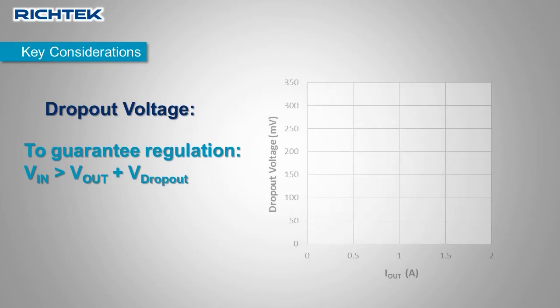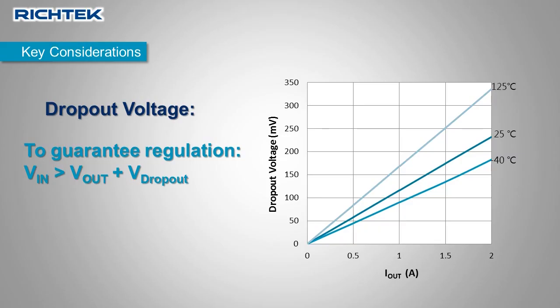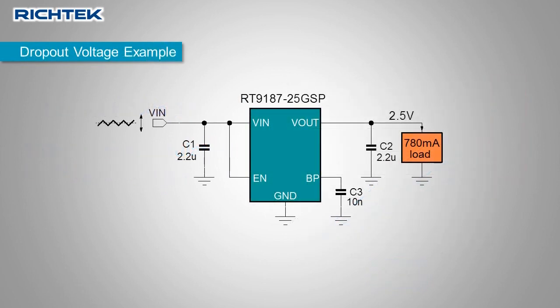Dropout curves as shown in the LDO datasheet show this dropout voltage as a function of output current and temperature. We'll illustrate the meaning of dropout voltage with an application of the RT9187-25, which is a 1A LDO with a fixed output voltage of 2.5V.